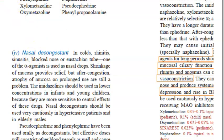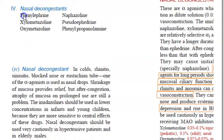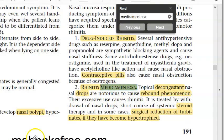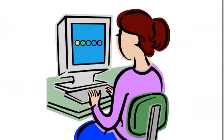Nasal decongestants: phenylephrine, oxymetazoline, naphazoline, xylometazoline, pseudoephedrine, phenylpropanolamine. If abused longer than prescribed, they cause rhinitis medicamentosa — hypertrophy of the turbinates due to rebound phenomenon. This completes all top priority questions in ENT.